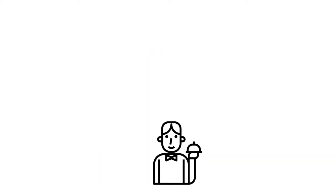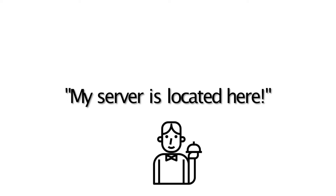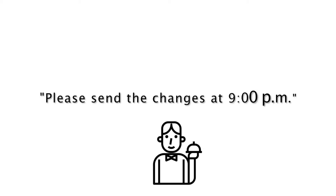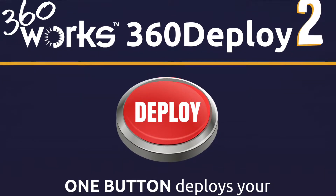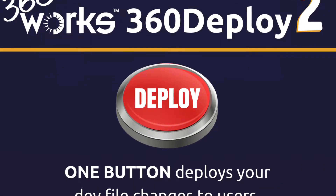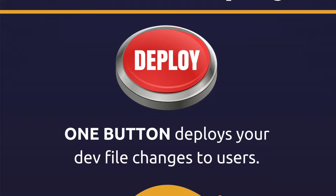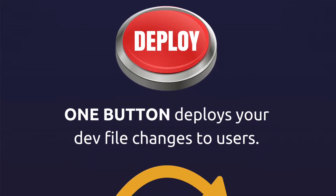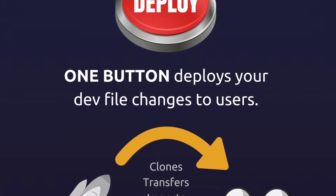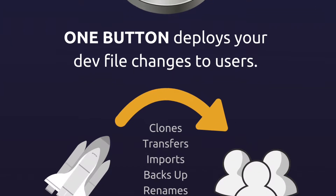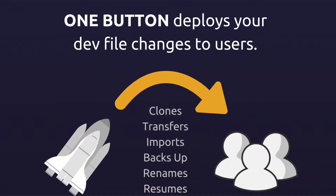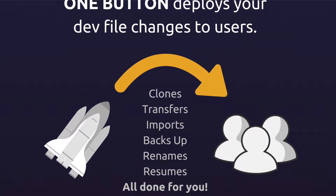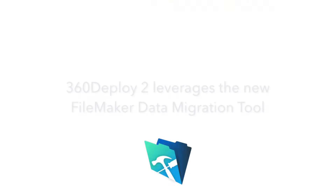360 Deploy is like having your own personal deployment assistant. You configure it — meaning you tell it where everything is and how you want it done — then you click one button to deploy development changes to your users, and 360 Deploy goes to work for you. It clones, transfers, imports, backs up, renames, resumes, and emails you a post-migration report once the process is complete.